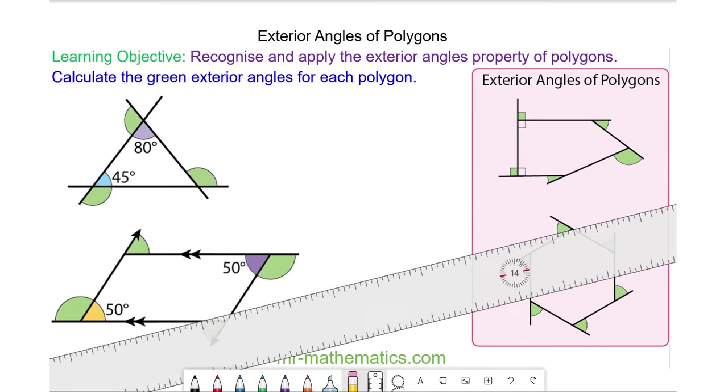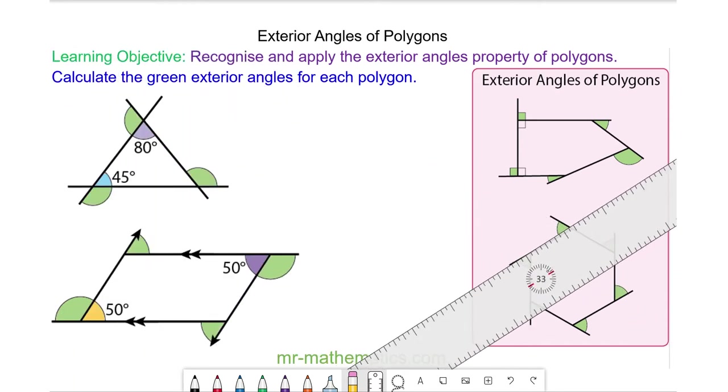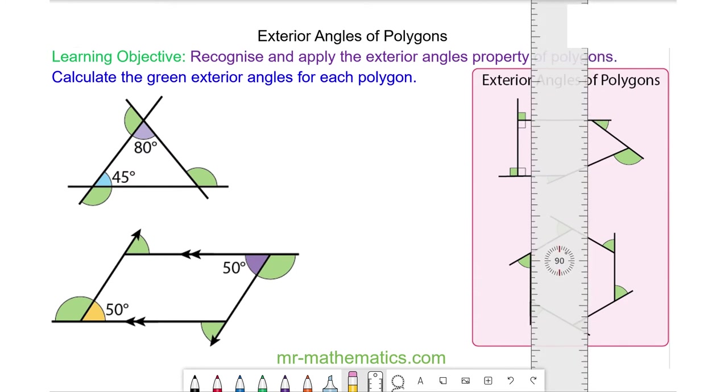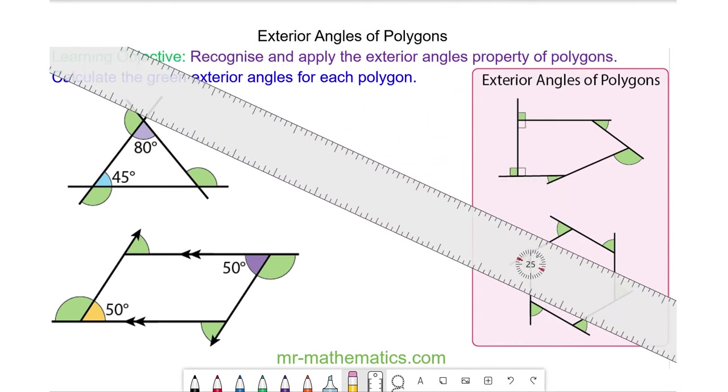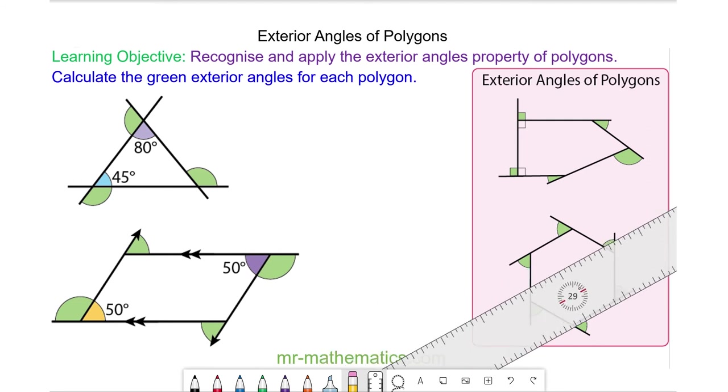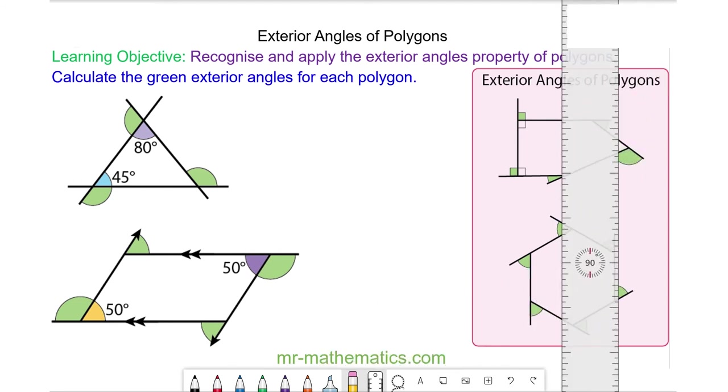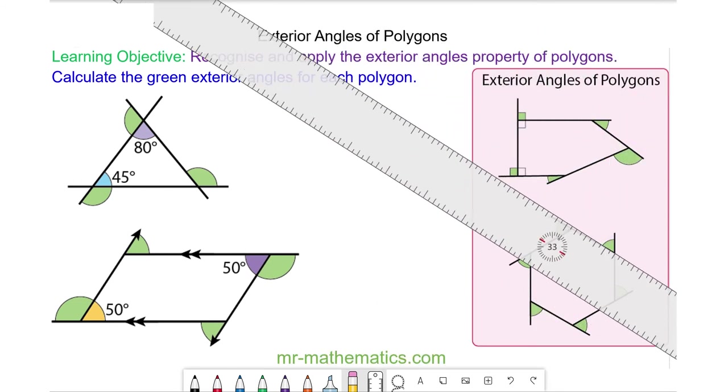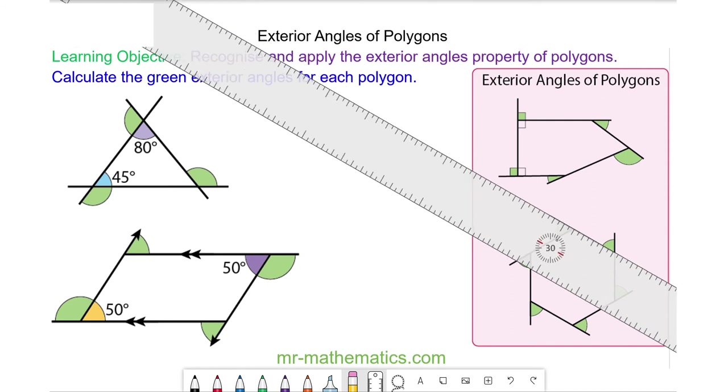As we go around the exterior angles, you can see the ruler is rotating around the hexagon and the path the ruler is making is a circle. So we're back to where we began.